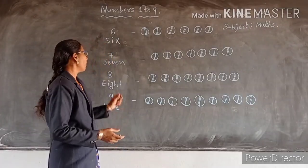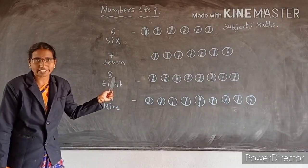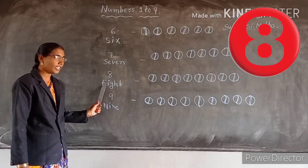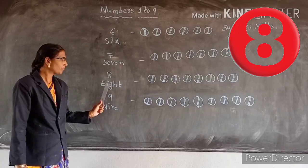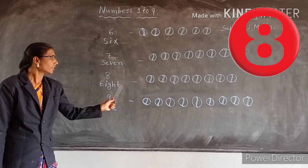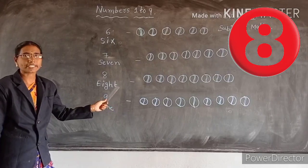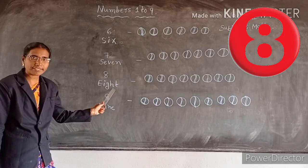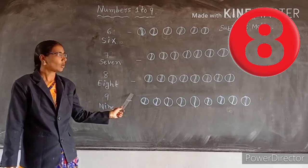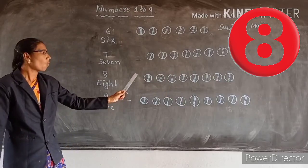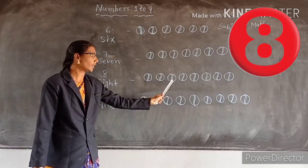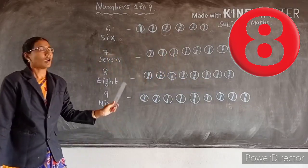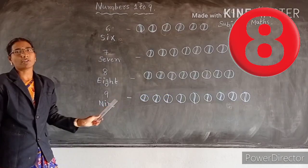8. What is this number? 8. Very good. What is this spelling? E, I, G, H, T. 8. How many parts are there? 8. How many parts are there? 8 parts.